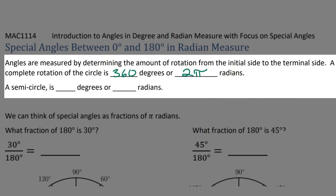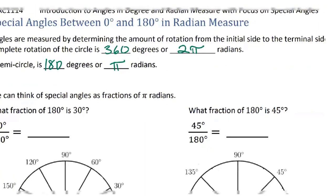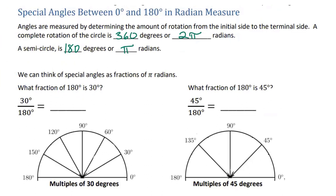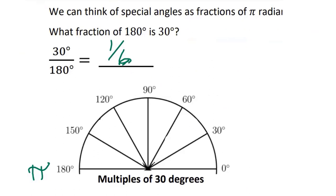A semicircle, then, is 180 degrees, or π radians. Just like before, we're going to focus on the top half of the circle — the 180 degrees — but we're going to think about radians. When doing multiples of 30 degrees, we have 6 π-pieces. Using the fact that 180 degrees is π, each 30-degree piece out of 180 degrees is what fraction? 30 over 180 reduces to one-sixth. So 30 degrees in terms of π would be π over 6. Zero degrees is 0, and 30 degrees is π over 6.